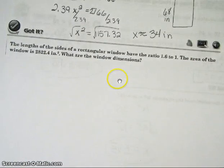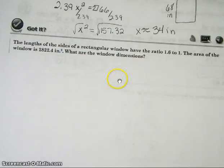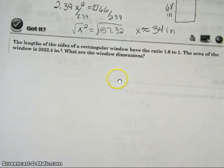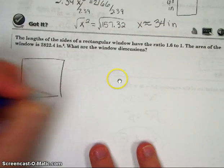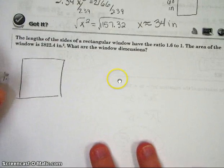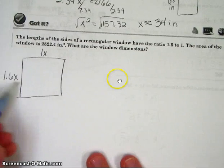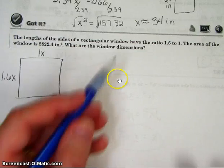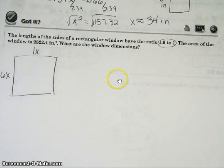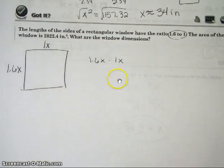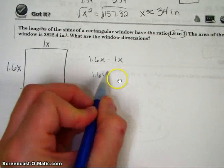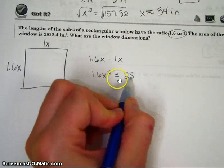It's the same type of idea. But this one is just a rectangle. The lengths of the sides of a rectangular window have the ratio of 1.6 to 1. The area of the window is 2,822.4 square inches. What are the window dimensions? Draw it if you really want to be able to do it properly. They said the ratio is a 1.6 to a 1. Well, any time you do ratios, that just means it's 1.6 times whatever x is and 1 times whatever x is. You guys know that it's just length times width. So I'm going to do 1.6x times 1x. That's 1.6x² squared. And they told us that the area is 2,822.4.